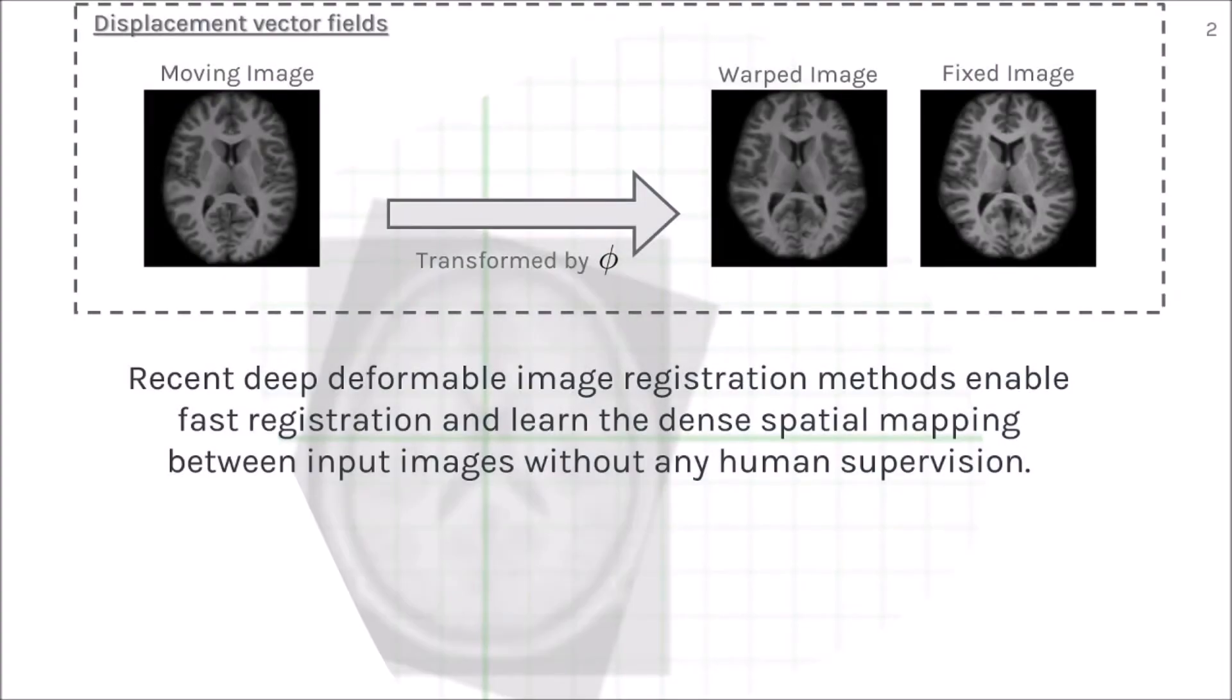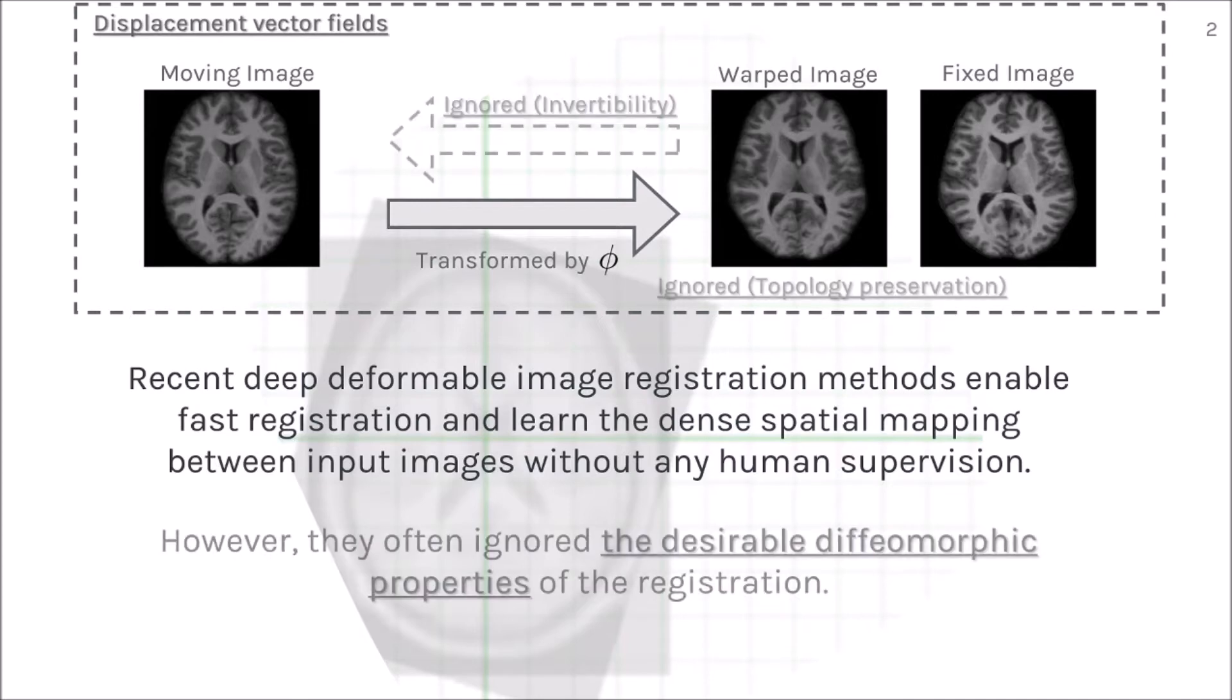Recent deep deformable image registration methods enable fast registration using convolutional neural networks. However, the diffeomorphic properties of the registration are often ignored by these methods.